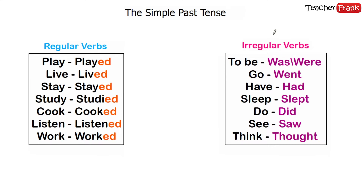And we have the irregular verbs. "To be" — you have to change to "was" for the singular form or "were" for the plural form. "Go" → "went", "have" → "had", "sleep" → "slept", "do" → "did", "see" → "saw", and "think" → "thought".